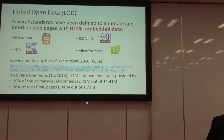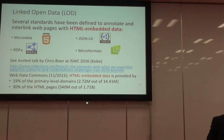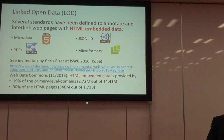Regarding linked open data, there was an interesting talk at the International Semantic Web Conference by Chris Bietzer presenting statistics about this. It's notable that 90% of primary-level domains — about 2.7 million out of 40.4 million, as of 2015 data — had this kind of semantic information embedded. Similarly, 30% of HTML pages found on the web had this kind of data semantics embedded.